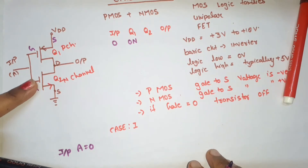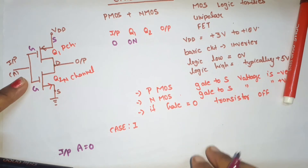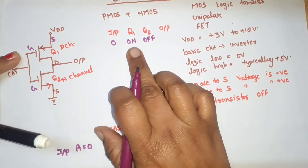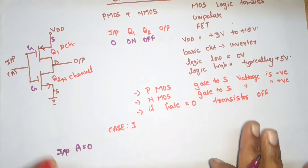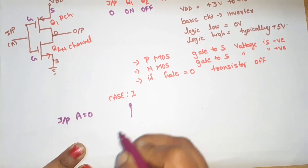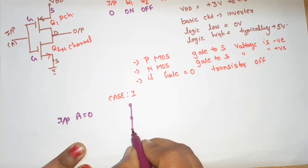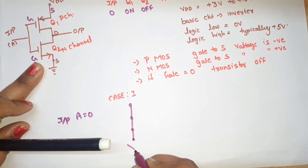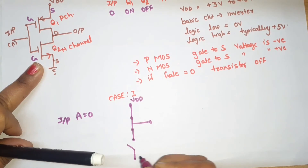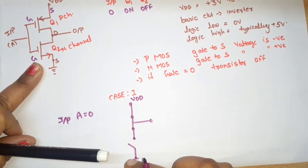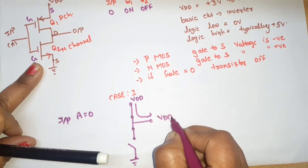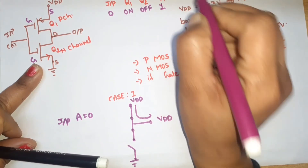When we check the NMOS: its source is connected to ground, which is 0. The gate is also 0, so gate-to-source voltage is 0 — meaning Q2 (NMOS) will be off. So for input=0: Q1 is on (switch closed) and Q2 is off (switch open). VDD has a path to the output and does not reach ground, so the output is approximately VDD — a high voltage.